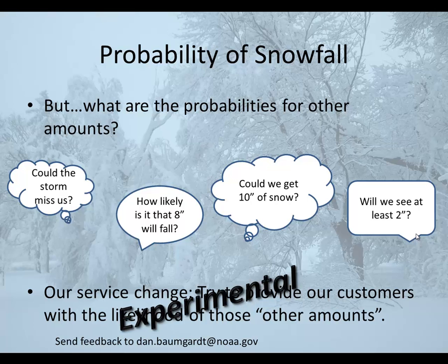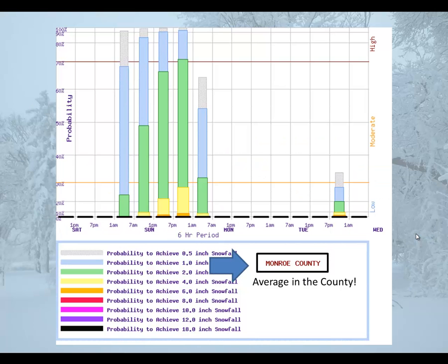Okay, so on to the graphics. First, this is the probability of snow graphic and is always an average over the entire county. This forecast example here is for Monroe County in western Wisconsin.